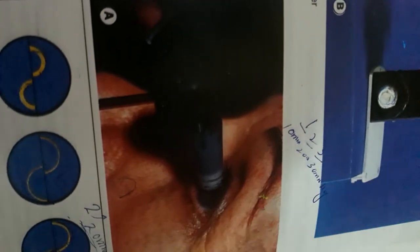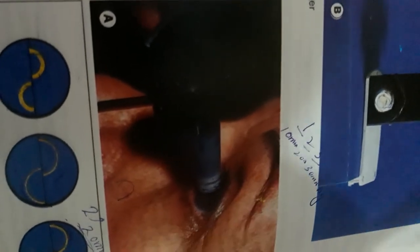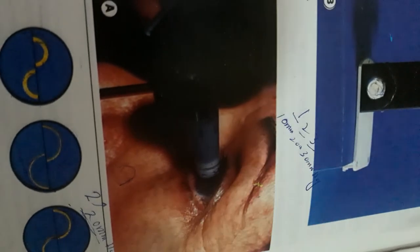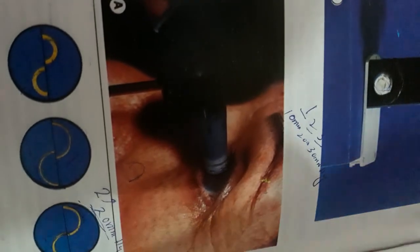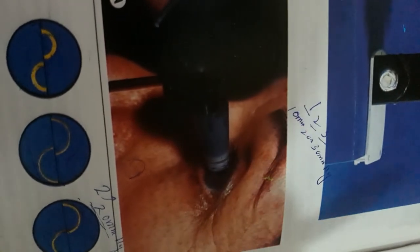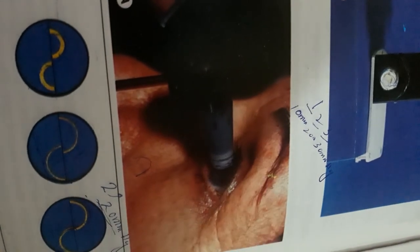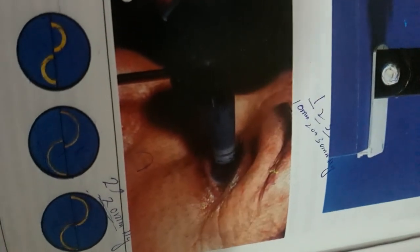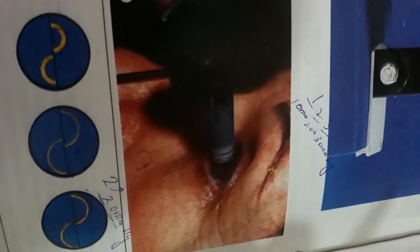Which method is best and most accurate for IOP measurement? Goldmann applanation tonometry gives accurate values of IOP, but in clinics or hospitals, air puff tonometry is mostly used to prevent the spread of infection. In Goldmann applanation tonometry, the device touches the cornea; in air puff tonometry, there is a non-contact method which is suitable because patients can be saved from infection.